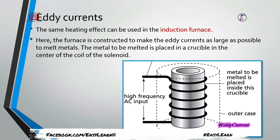Eddy currents are not always a headache — sometimes we want to use them. For example, to melt metals like iron, which is very difficult ordinarily, using this principle it is much easier. An induction furnace consists of an outer case with a high-frequency alternating current applied. The coils are wound on a crucible that has a very high melting point so it can bear the heat without melting itself.